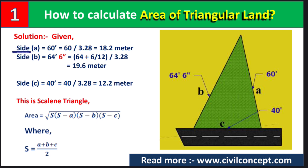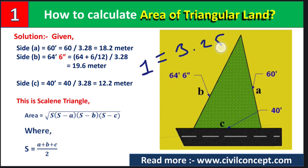You can see here this is side A, which is 60 feet. When we convert it into meters we will get 18.2 meters, because one meter is equal to 3.28 feet. So when we divide by 3.28 it will be converted into meters.